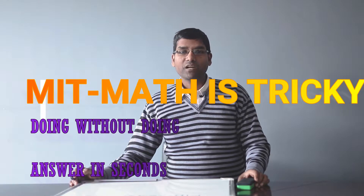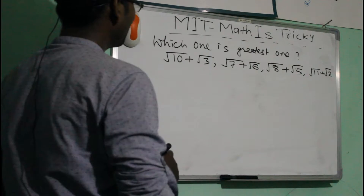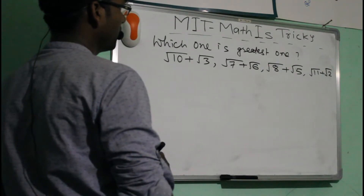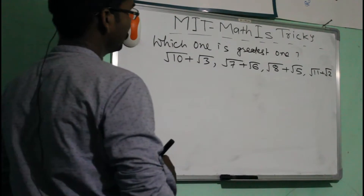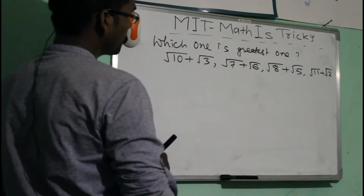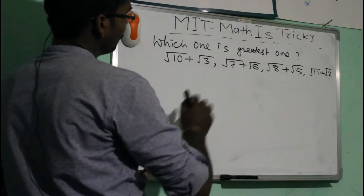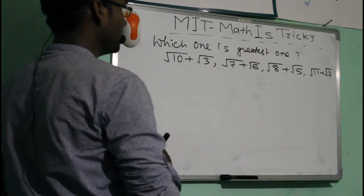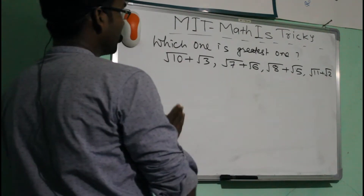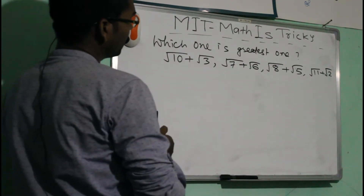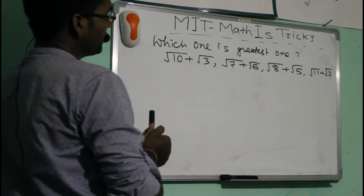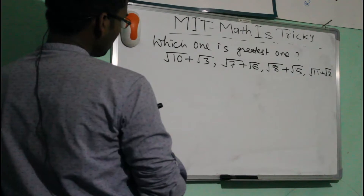Welcome to the channel Math Is Tricky. Thank you so much for watching my videos. I am here with another super fast trick about surds — how to find which one is the greatest or smallest, and how to write them in ascending or descending order within seconds. After this video, you will be able to do this just within seconds.